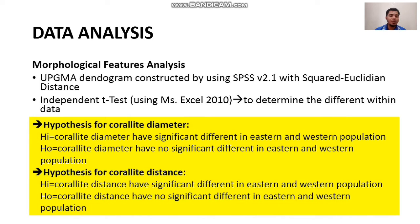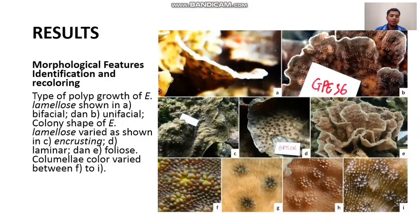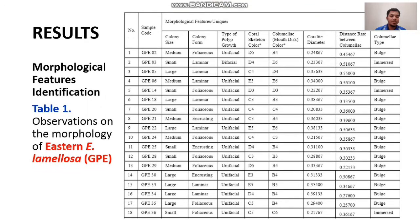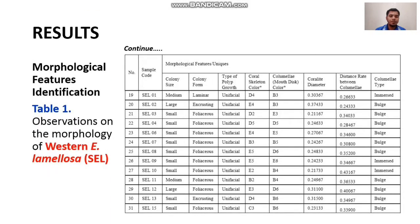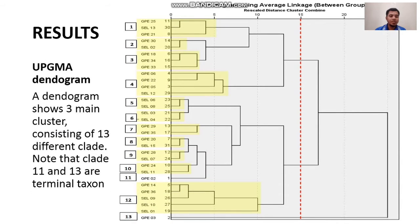This is the hypothesis for coralite diameter and coralite distance. This is the result of our recoloring pictures, without any bluish color. This is the result of our observation on morphological features of all documented samples. The dendrogram shows 3 main clusters consisting of 13 different clades.